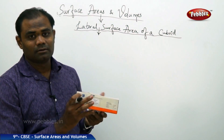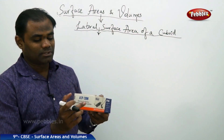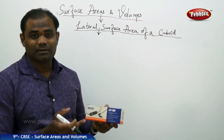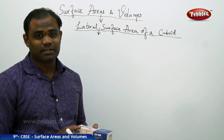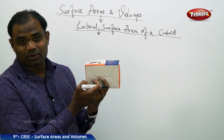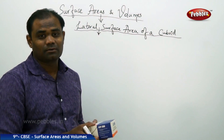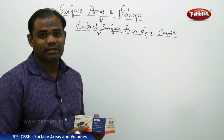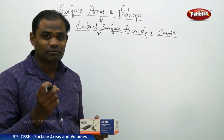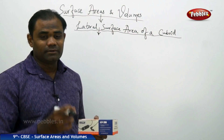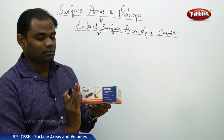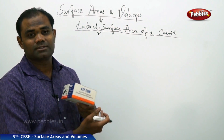Face one plus face two plus face three plus face four make the lateral surface area. The top and bottom faces do not come into account. So lateral surface area is the surface area of the cuboid which does not include the top and bottom — it includes only the lateral side faces.